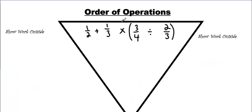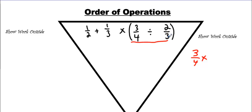How about this one here? We got brackets again. Let's do that first. We're going to go 3 fourths, change the division to times, and flip the second one. Some of you might forget to flip it — if you don't flip it, you'll get the wrong answer every time. So we have that, you're going to get 9 over 8. Keep it.